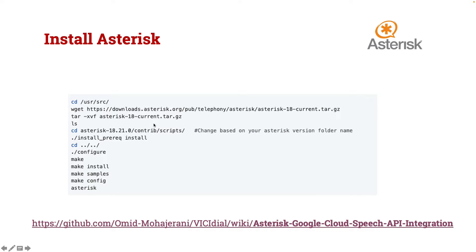The first step is to install Asterisk from source. If you are using a system like VisiCal, VCbox, or FreePBX, just ensure you have Asterisk 18 or above, because the module we are using is supported on Asterisk 18 and above. If you have an older VCbox system you don't want to upgrade, you can set up a new system per my instructions and create a trunk to your existing VisiCall or FreePBX system. There are also Docker-based solutions, but I think this is the easier approach.